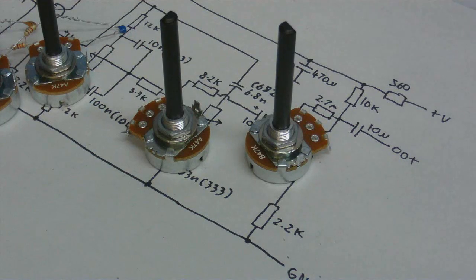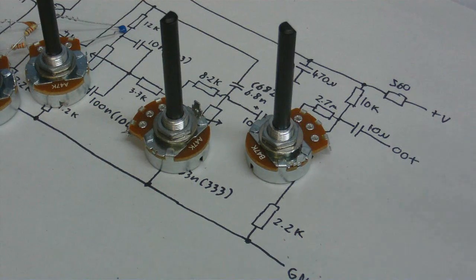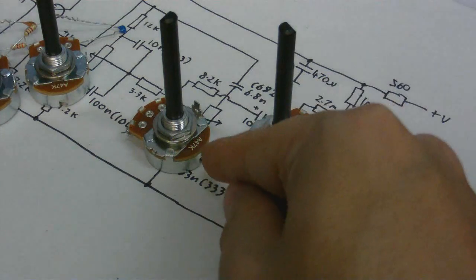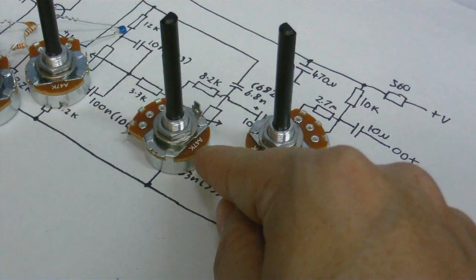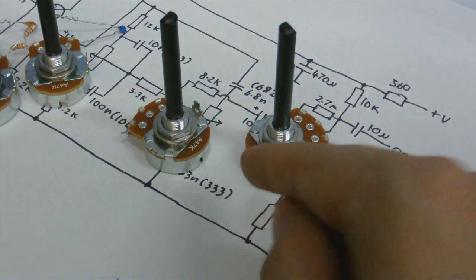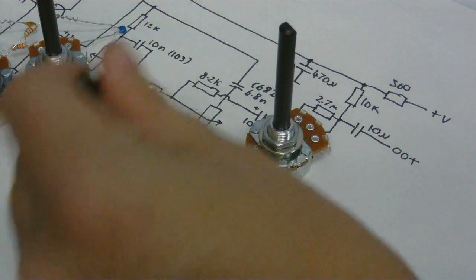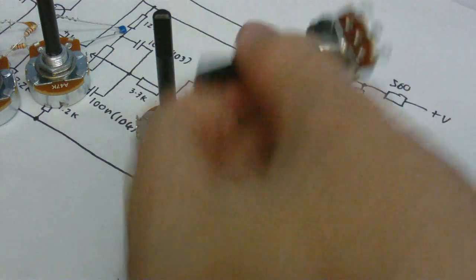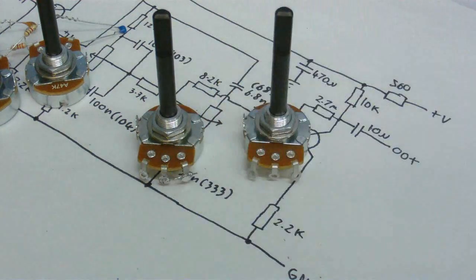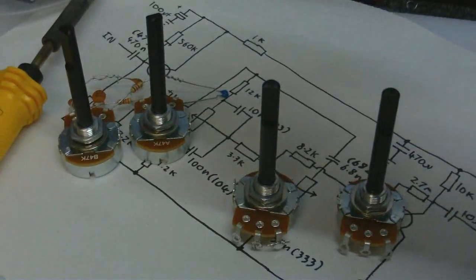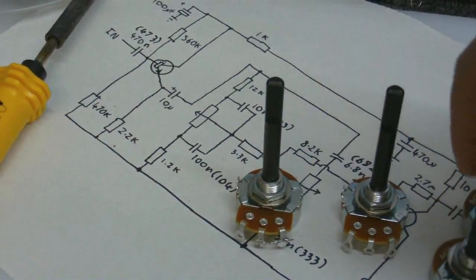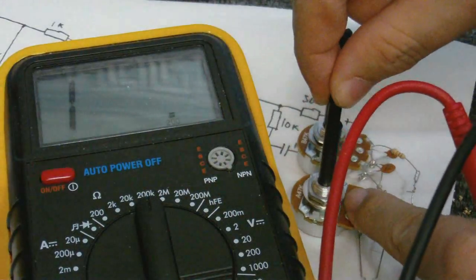I think, and I'm not certain about this, but I think you can identify whether a potentiometer is logarithmic or not by whether it has B or A on it. This one has A on it and it says A 47k. This one says B 47k. This is the logarithmic potentiometer I took out and this is just another linear one.